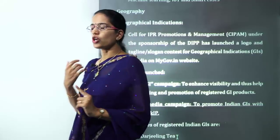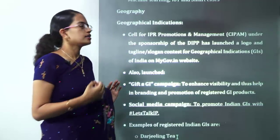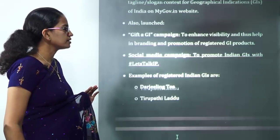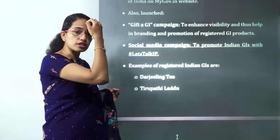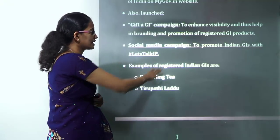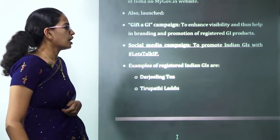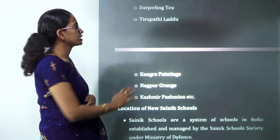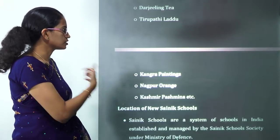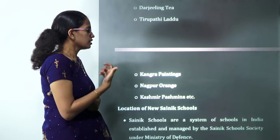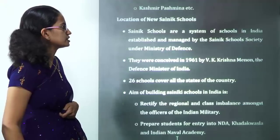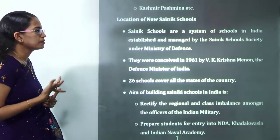Moving to geography, the Geographical Indication (GI) status is important. The government has come up with a GI campaign for registering geographical indication specialties in India, along with the hashtag #LetsTalkIP. Some registered geographical indications include: tea from Darjeeling, laddoos from Tirupati, paintings from Kangra, oranges from Nagpur, and Pashmina from Kashmir.